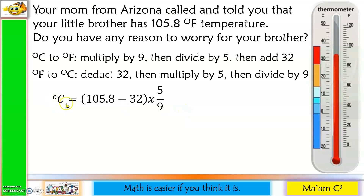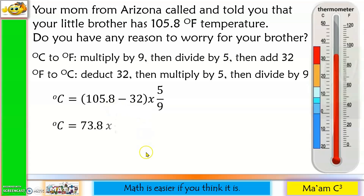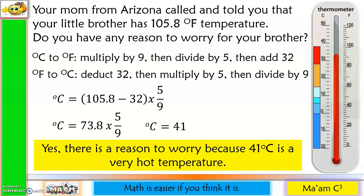Degrees Celsius: given the degree Fahrenheit of 105.8, we deduct 32, then multiply it by 5, and then divide it by 9. 105.8 minus 32 is 73.8. Times 5, divided by 9, is 41 degrees. So yes, there is a reason to worry, because 41 degrees Celsius is a very hot temperature.